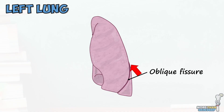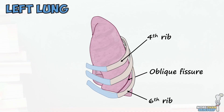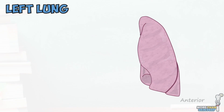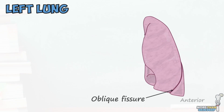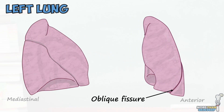However, in this case it sits mostly within the fifth intercostal space, until right near the very top where it enters the fourth intercostal space. Looking at the left lung from its mediastinal surface, we can see the oblique fissure sweeps down diagonally across the lung and meets the hilum in the middle.